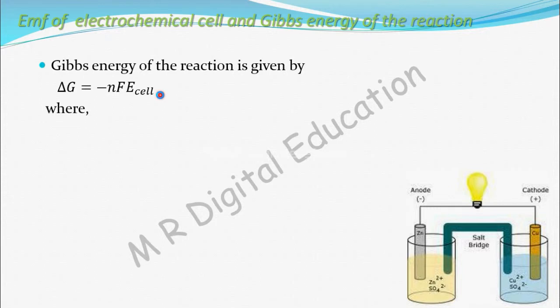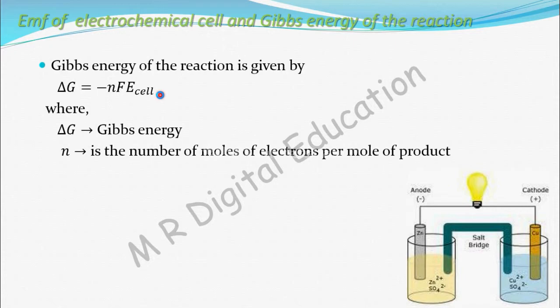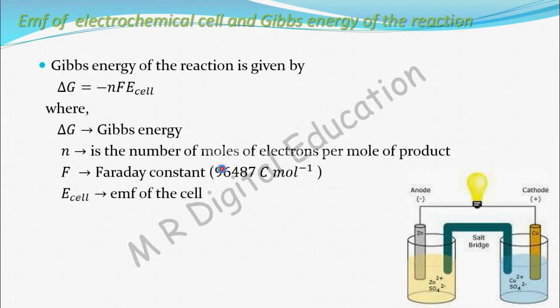What are the terms in this equation? Delta G is Gibbs energy and n is the number of moles of electrons per mole product. F is Faraday constant, 96,487 Coulomb per mole. E cell is EMF of the cell.